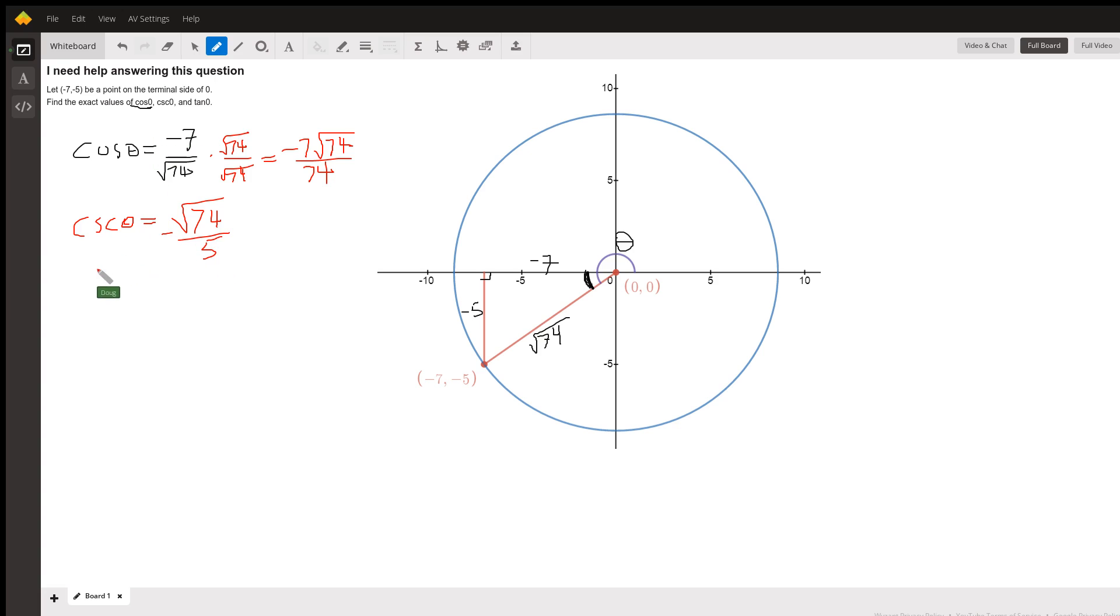And finally the tangent of theta is opposite over adjacent. So negative five over negative seven becomes positive five sevenths.